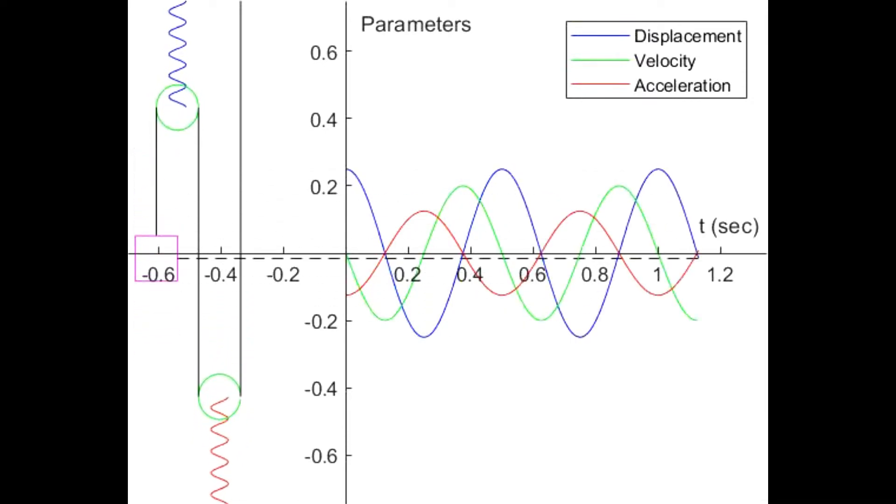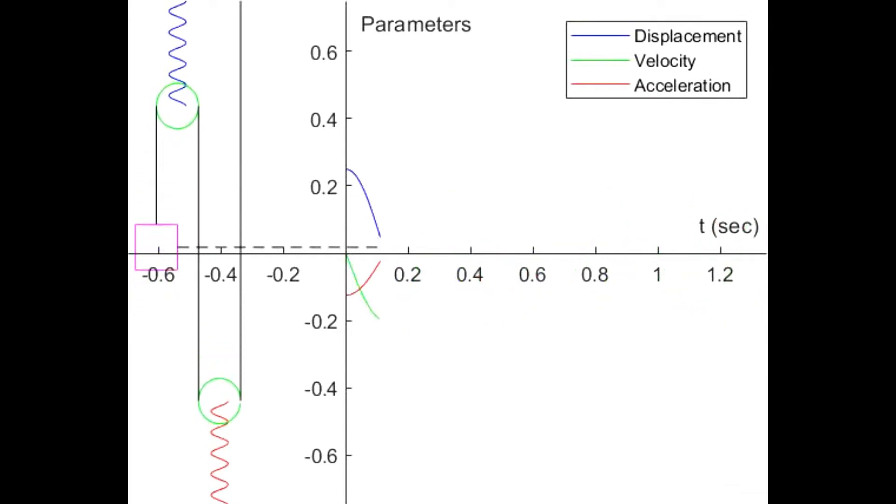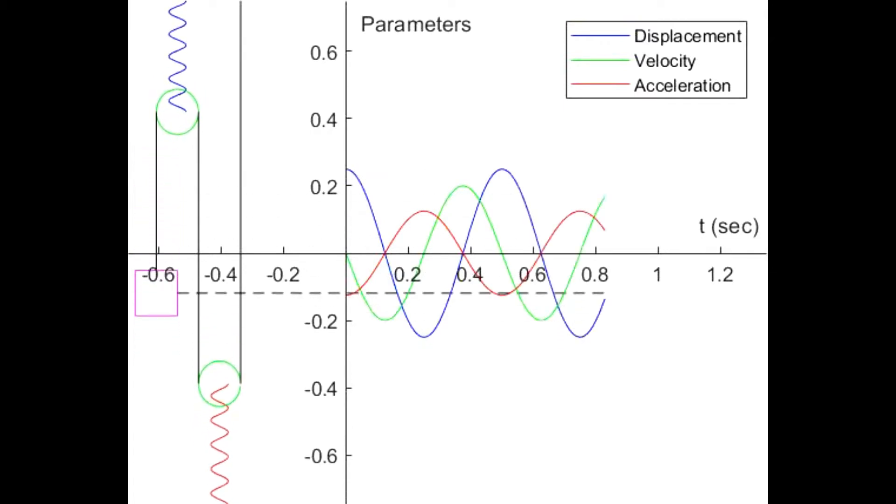The springs, pulleys, and block execute simple harmonic motion about their mean position. The block is seen to have a higher amplitude than either of the pulleys.